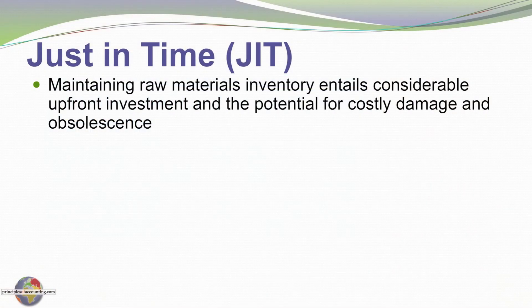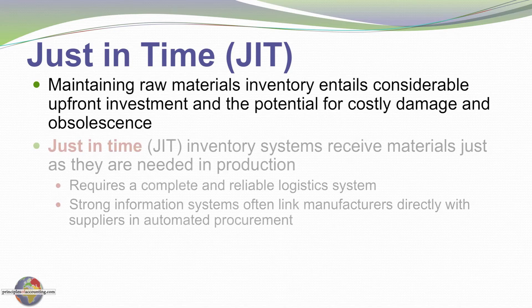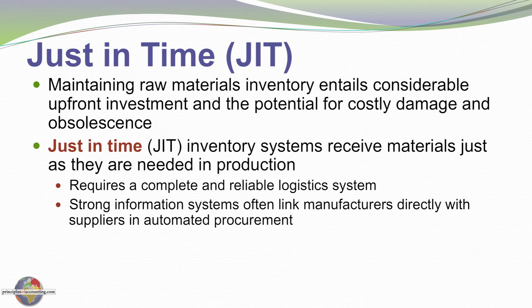Just-in-time is a term you might have heard. It has to do with minimizing the amount of inventory you carry. Maintaining raw material inventory entails considerable upfront investment as well as the potential for damage and obsolescence. With a just-in-time system, goods are scheduled to be received just as we need them. It does require a reliable, complete logistics system. If you don't receive a good expected to be delivered on schedule, the whole production process can come to a halt, which is obviously very costly. Strong information systems often link manufacturers directly with suppliers in an automated procurement process in a true just-in-time inventory system.